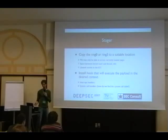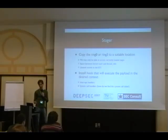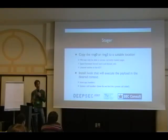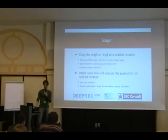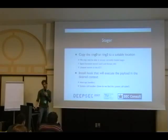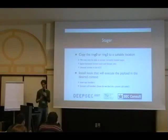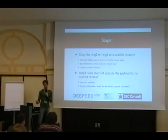And the second question is: how can I install a hook that later on will execute my payload in a context that's desirable for me? To really make it short, we copied our payload to the interrupt descriptor table because there are many empty entries there, and we installed a system call hook — we hooked the sys_execve function.